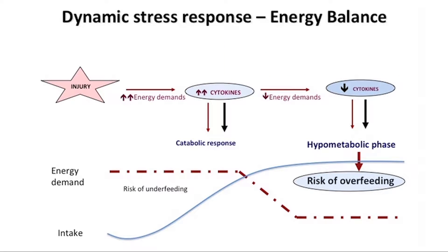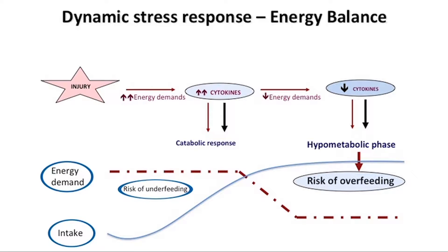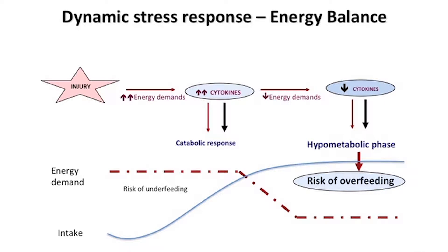On the left side of the slide, the relationship between intake and energy demand puts the child at risk of underfeeding. But on the right side, there reaches a phase when energy intake has gradually succeeded and reached a level well beyond the energy demands, which by now have gradually decreased. This is the critical period where children may be exposed to the risk of overfeeding.